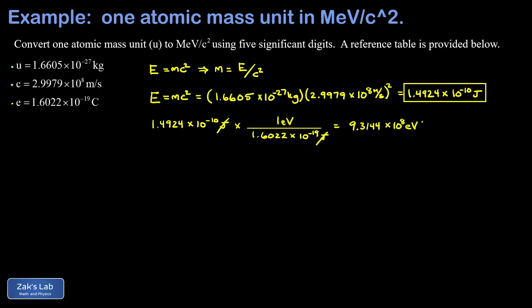And when we run the numbers on this, we get 9.3144 times 10 to the eighth electron volts. Now our goal in the problem is to express things in mega electron volts, and that's 10 to the sixth. So I peel off two factors of 10 and change the coefficient to 931.44, and then I get times 10 to the sixth EV. And of course, that's mega electron volts. So I get 931.44 MeV.